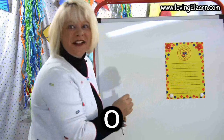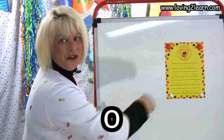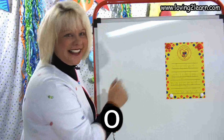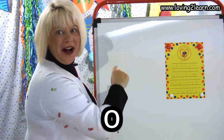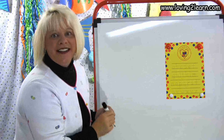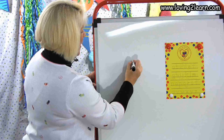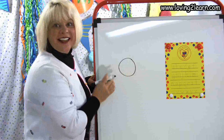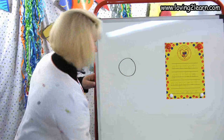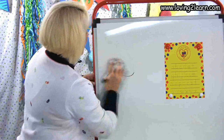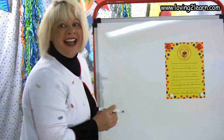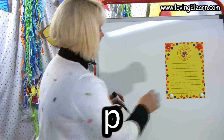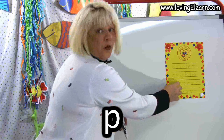The next letter is the letter O. O, we circle around. Do it with me in the air: circle around. Let's do it on the wipe-off board: circle around. There's the letter O.